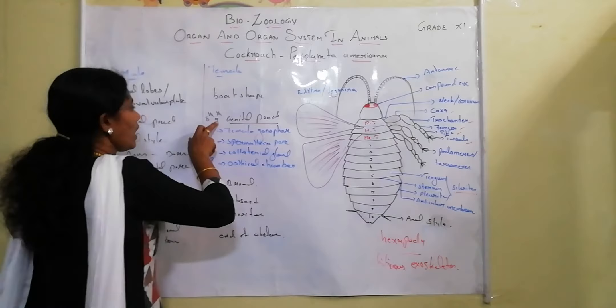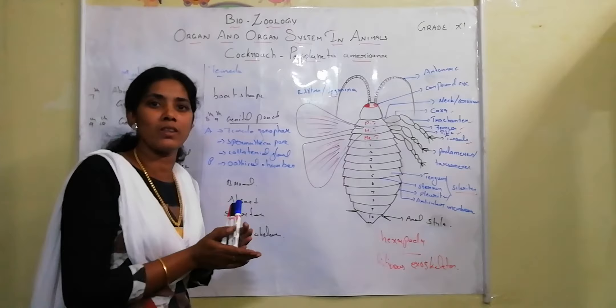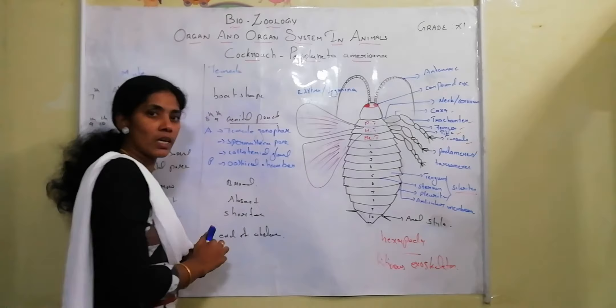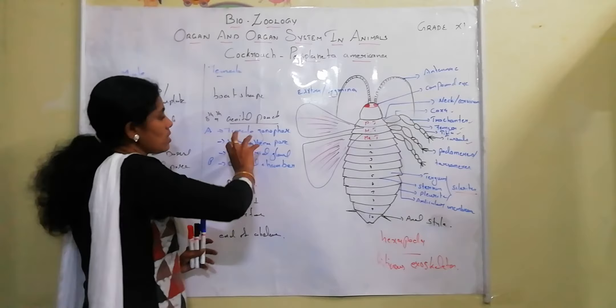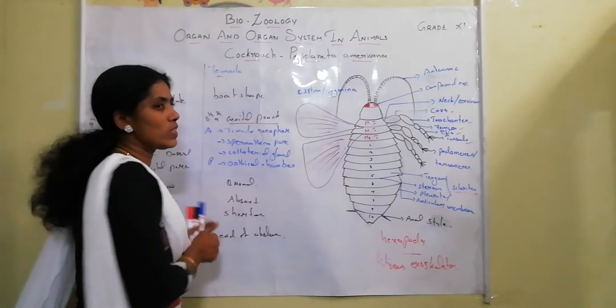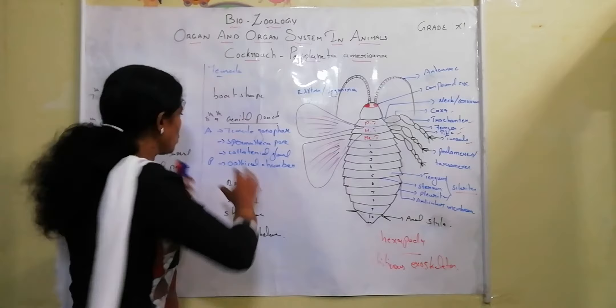The genital pouch in females consists of: in the anterior region — female gonopore, spermathecal pore, and collateral glands. The posterior region consists of an ootheca chamber, from which the cocoon arises. All these are involved in the reproduction process, which will be discussed in detail during the reproduction part.